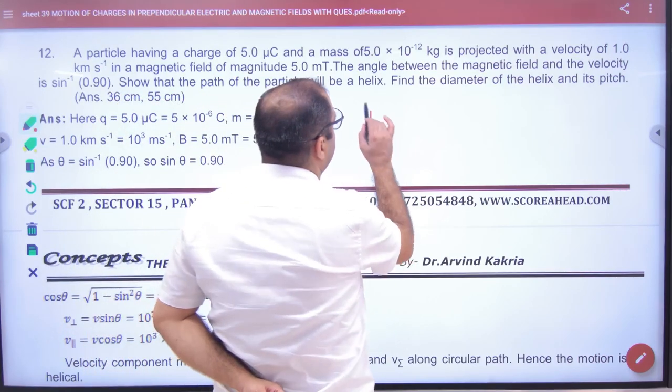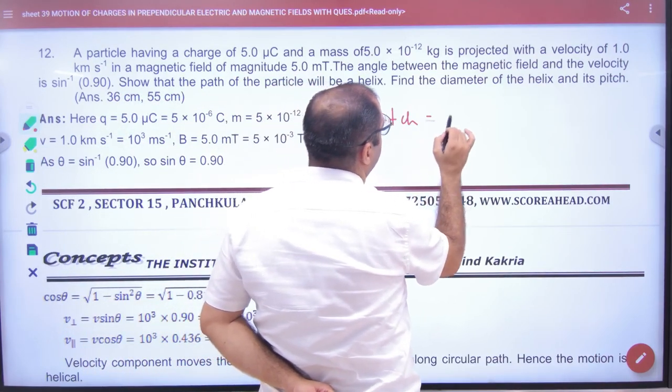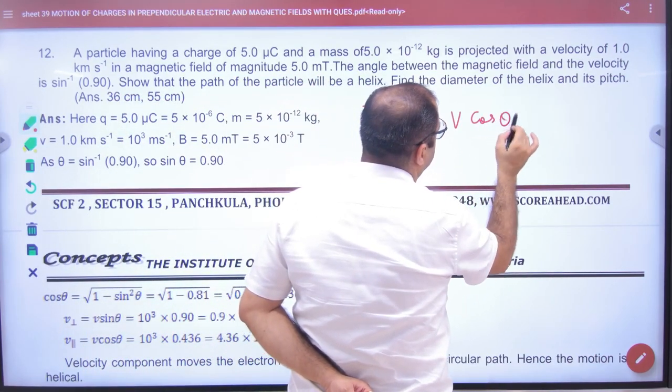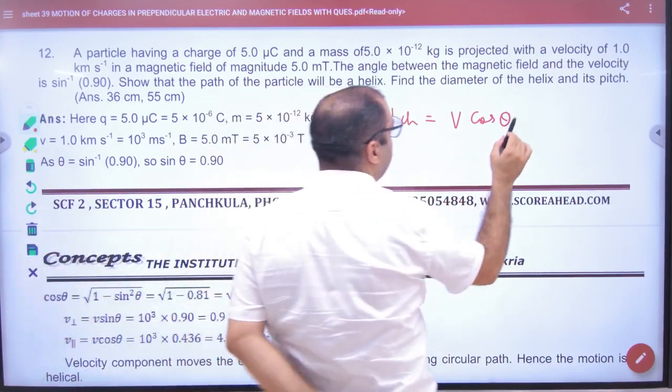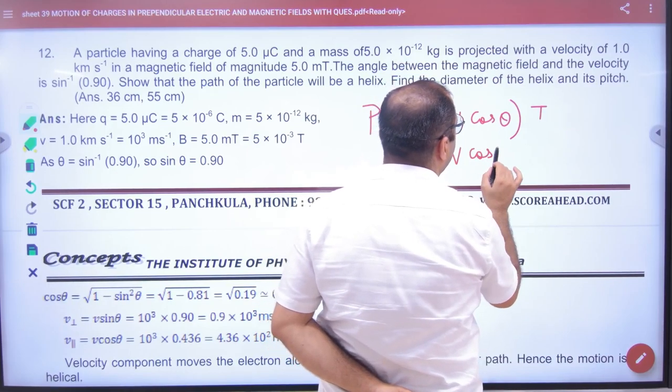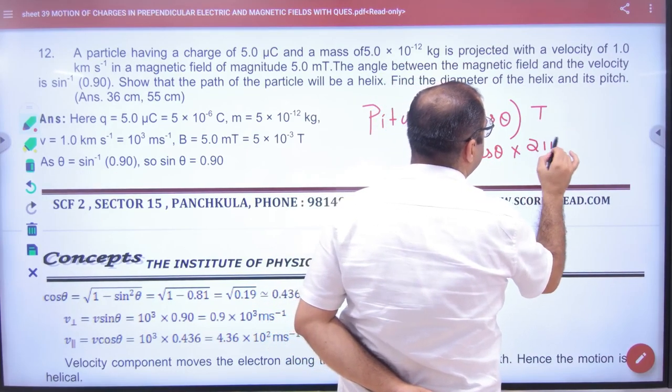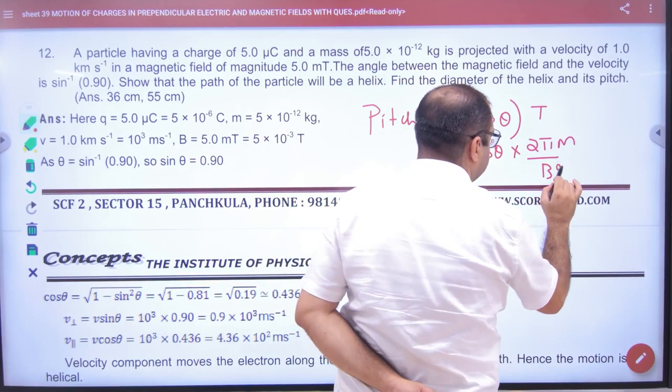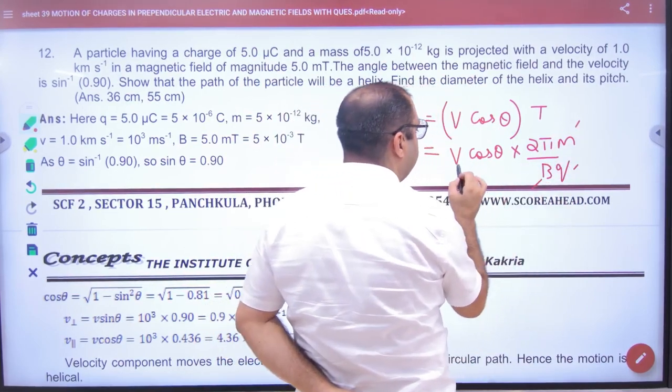The second part: you have to find the pitch. The pitch formula is v cos theta times the time period T, where T = 2πm/(Bq). All values are given.